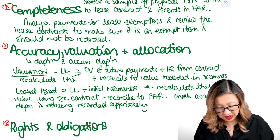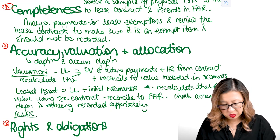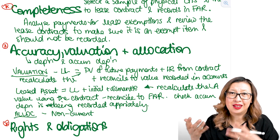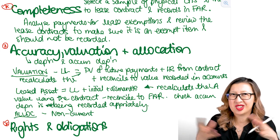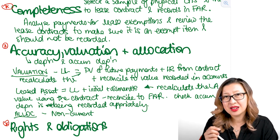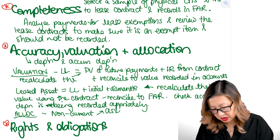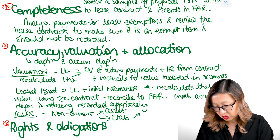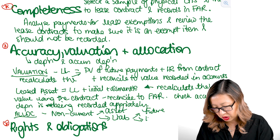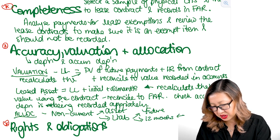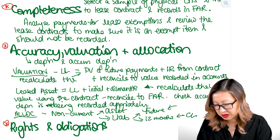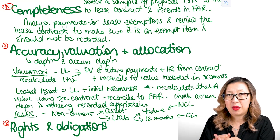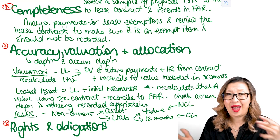The other thing to think about is allocation. Most of these items should be in the non-current category: leased assets are likely non-current assets, and the lease liability is mostly non-current. However, the liability is split — what you owe in the next 12 months should be recorded as a current liability, and anything beyond 12 months as a non-current liability. So you need to inspect the records and look at what's on the balance sheet to make sure amounts are apportioned and allocated correctly.